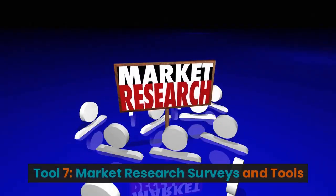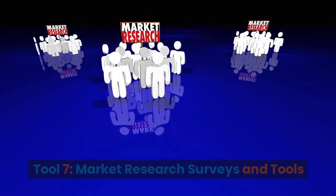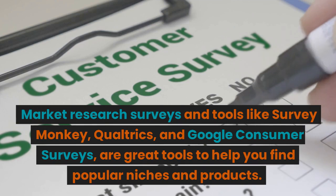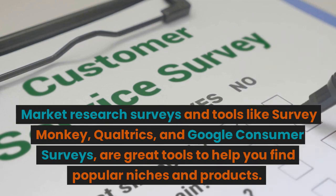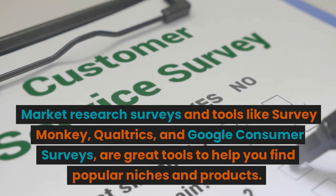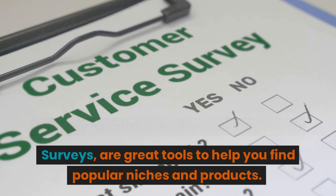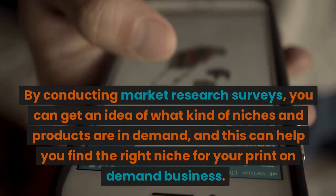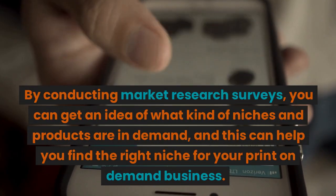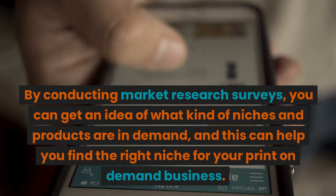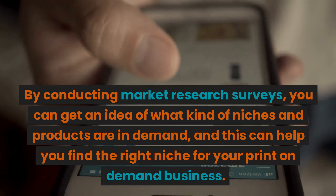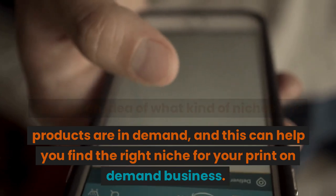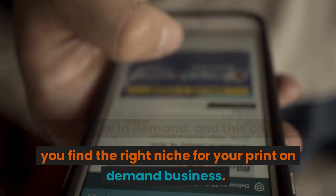Tool 7: Market Research Surveys and Tools. Market research surveys and tools like SurveyMonkey, Qualtrics, and Google Consumer Surveys are great tools to help you find popular niches and products. By conducting market research surveys, you can get an idea of what kind of niches and products are in demand, and this can help you find the right niche for your print-on-demand business.